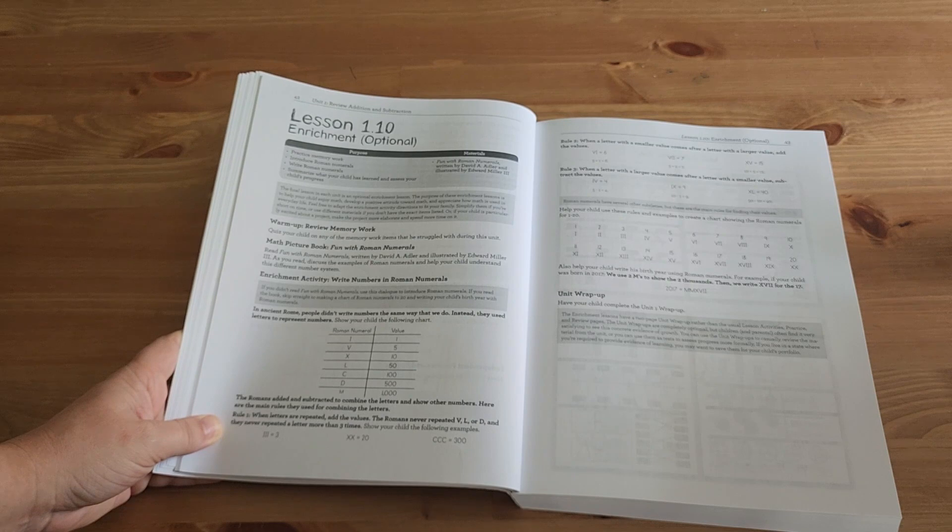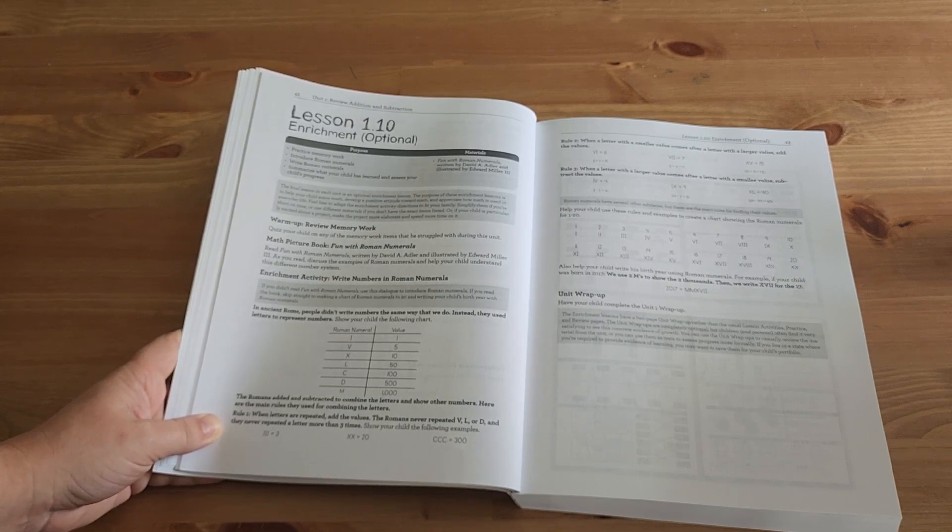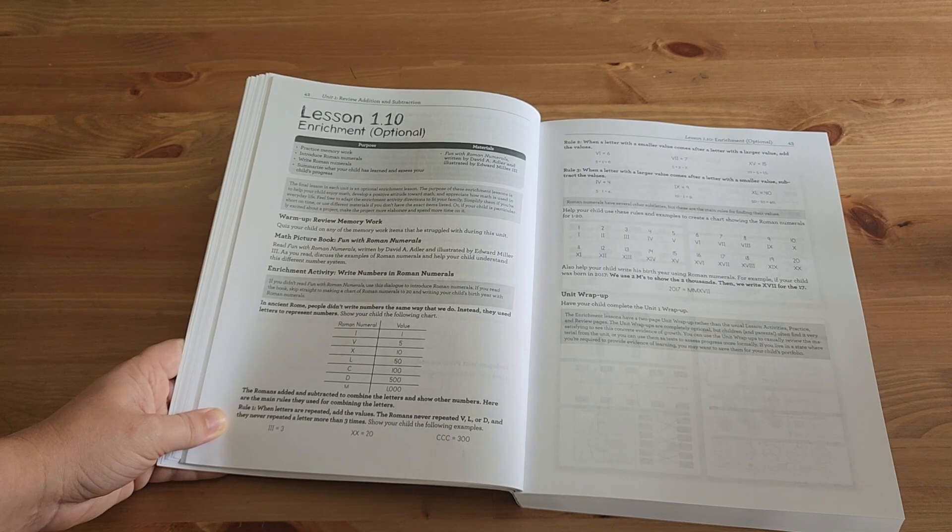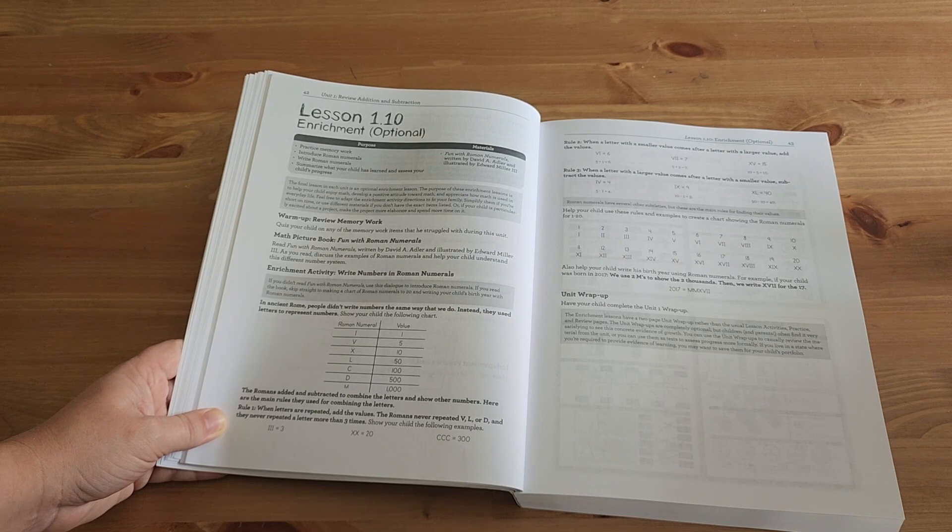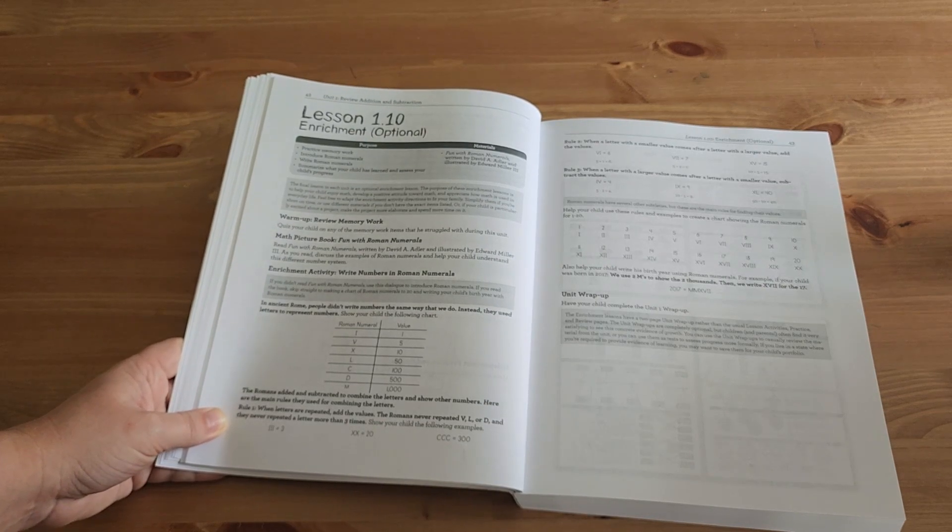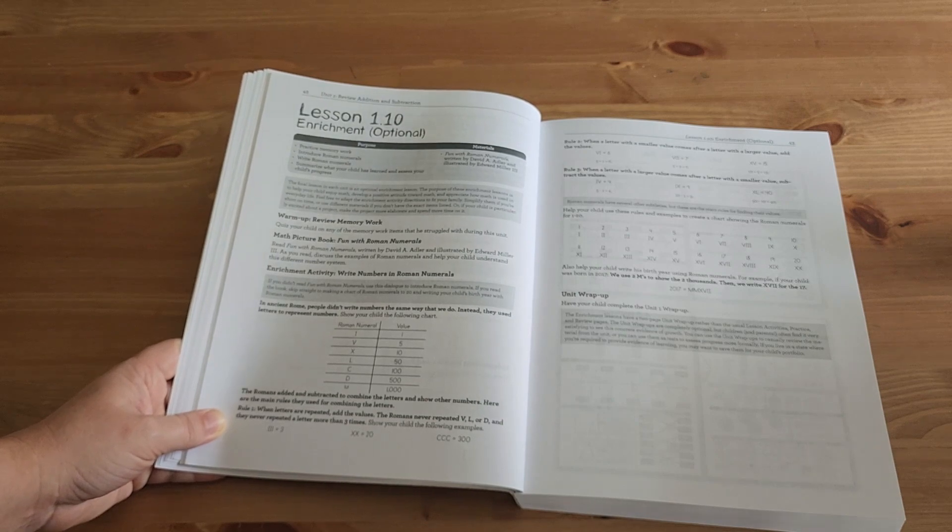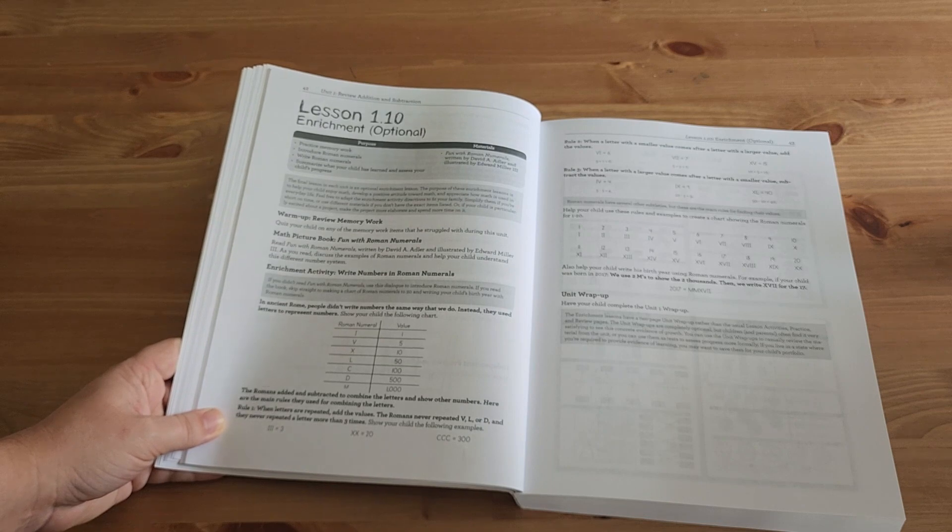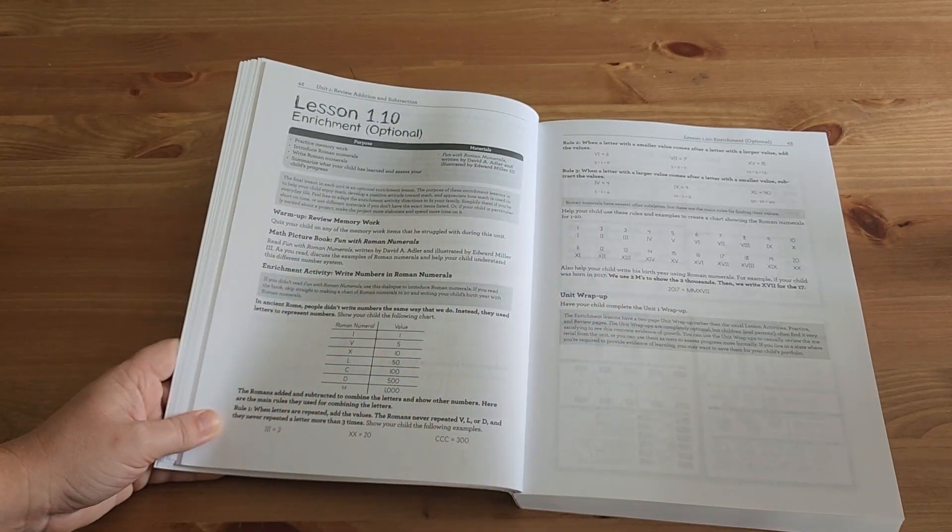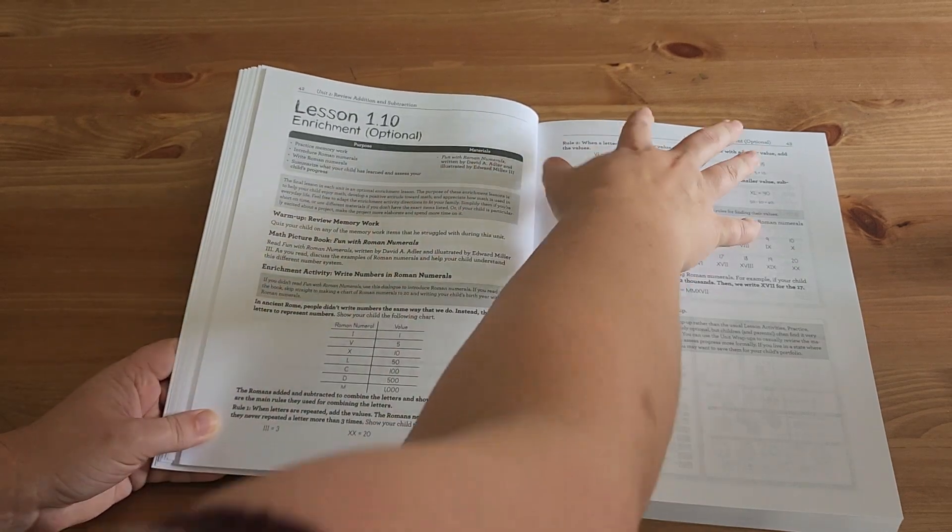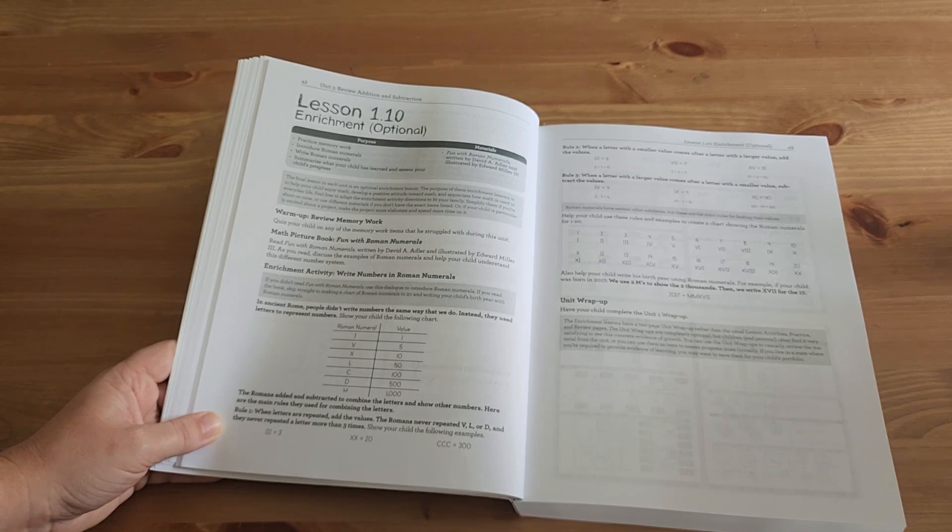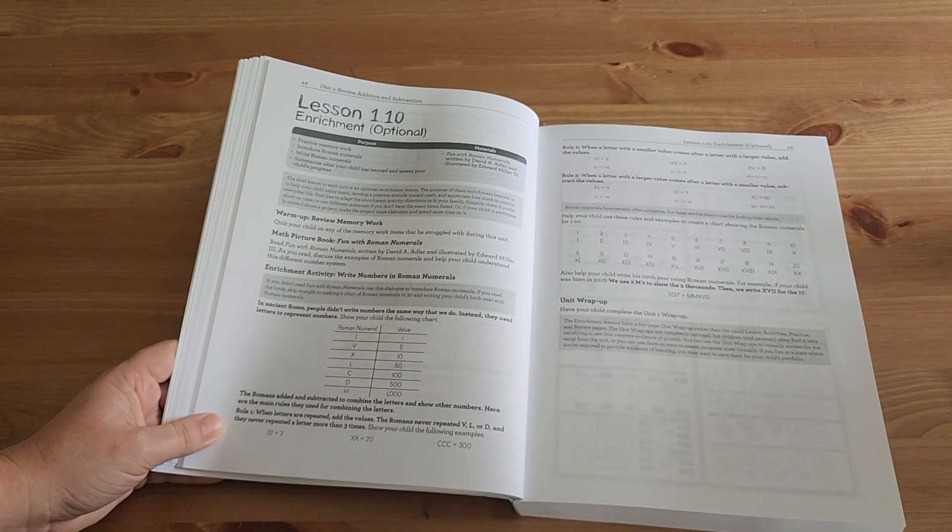Now, another difference about this is the enrichment lessons. Obviously they are not coming at the end of each week. They are coming at the end of each unit. To be honest, we have not done the enrichment lessons in the past. It's kind of that extra day. We tend to only do math four times a week. So we would kind of skip the enrichment lessons. As long as my son was grasping and understanding the concepts that were taught that week, I felt confident that we could move on. Now, the enrichment lessons in third grade are set up a little bit differently in the fact that there is some paperwork to go with it. So there is the lesson. As always, there is a book to go with this enrichment lesson. And so I'm hoping that we will really make time to bring in this extra book. I think that my son will love that.